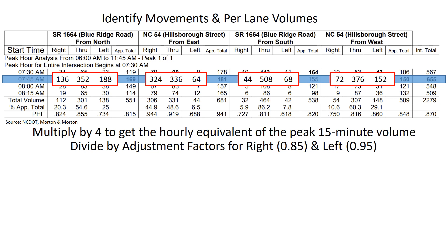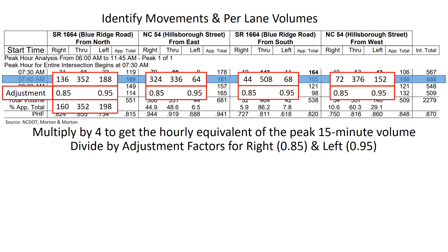Next, we're going to divide by adjustment factors for the right and left turning movements. For the right the factor is 0.85, and for the left it is 0.95. These are operational adjustments to account for the impact turning movements have on vehicles moving through the intersection. Dividing by those values means the volumes actually increase for the right and the left — essentially assuming those vehicles have a larger than one-to-one impact.